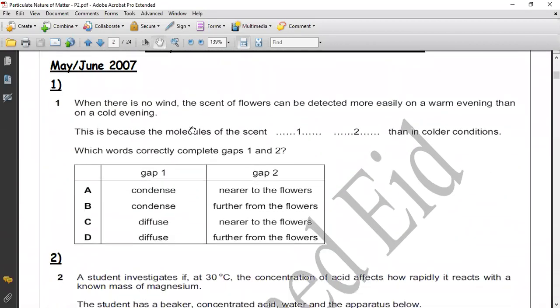At the beginning, first question. It says when there is no wind, the scent of flowers can be detected more easily on a warm evening than on a cold evening. Warm evening means high temperature, so we increase the temperature. This is what means warm evening. This is because molecules of the scent [space] then in colder conditions.